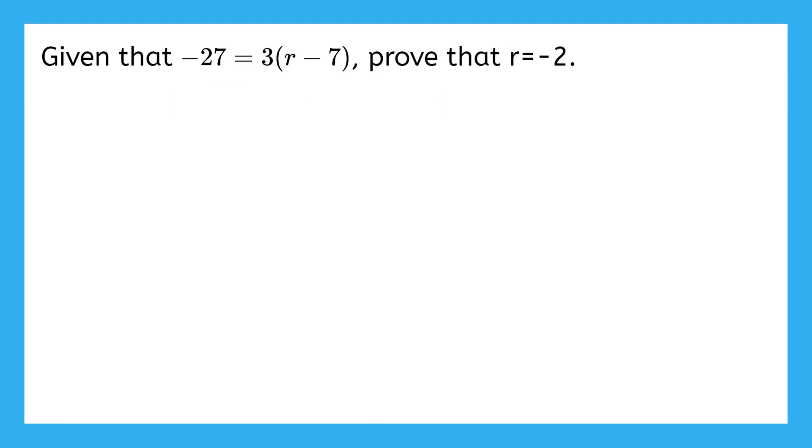Let's try one more from start to finish. Here we have given that negative 27 equals 3 times r minus 7. Prove that r equals negative 2. There's that word again. Prove. That's our signal to set up a two-column proof structure. I can label my columns as statement and reason.